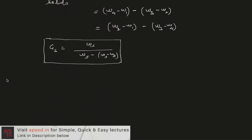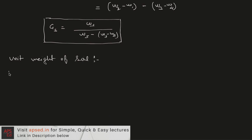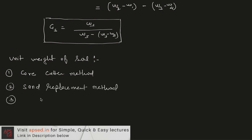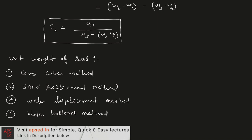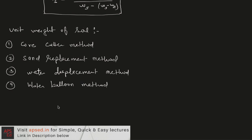Now let's talk about the unit weight of soil and how we determine it. There are a few methods used: the first is the core cutter method, the second is the sand replacement method, and the third is the water displacement method. Let's see one by one how we obtain the unit weight or density of soil using these methods.